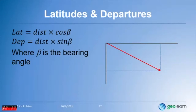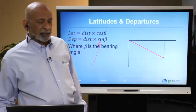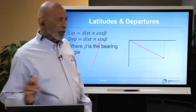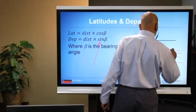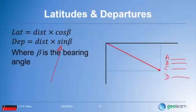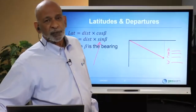To calculate latitudes and departures: latitude = distance × cosine(bearing angle); departure = distance × sine(bearing angle). There are several steps on a calculator: convert degrees-minutes-seconds to decimal degrees, take the trig function, then multiply by the length. On an exam with four answer choices, be very careful — one logical distractor will likely be the result of taking sine and cosine without converting DMS to decimal degrees first.